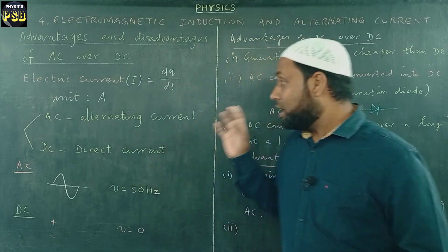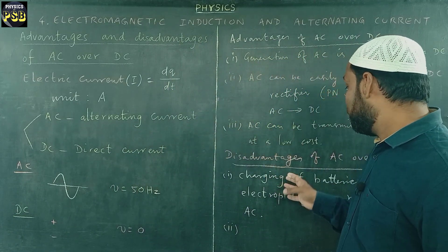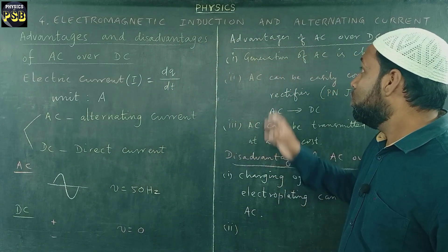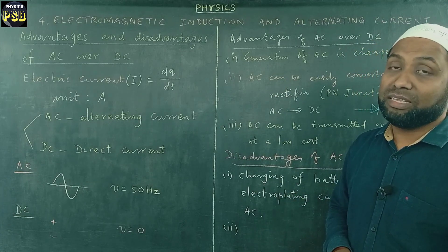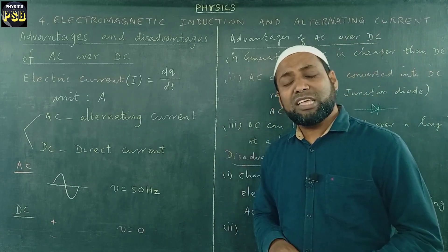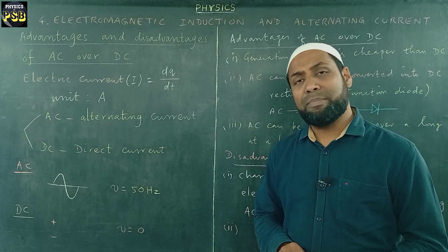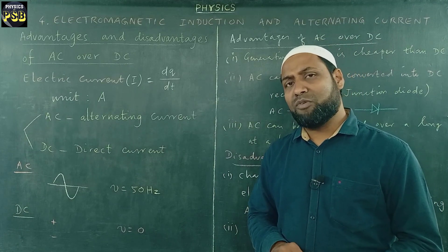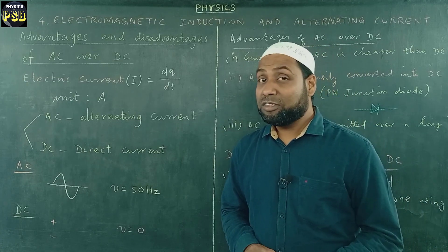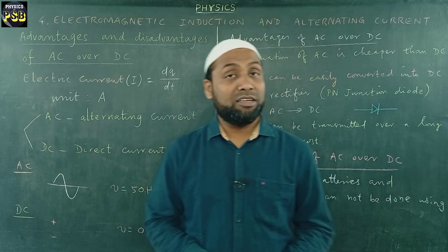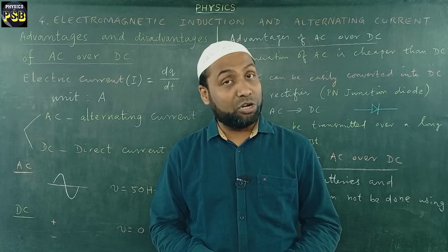Now, when you compare the disadvantages of AC over advantages of AC, you may find that AC has got the least disadvantages compared to its advantages. And that is the reason why it is preferred over DC for power transmission and generation.